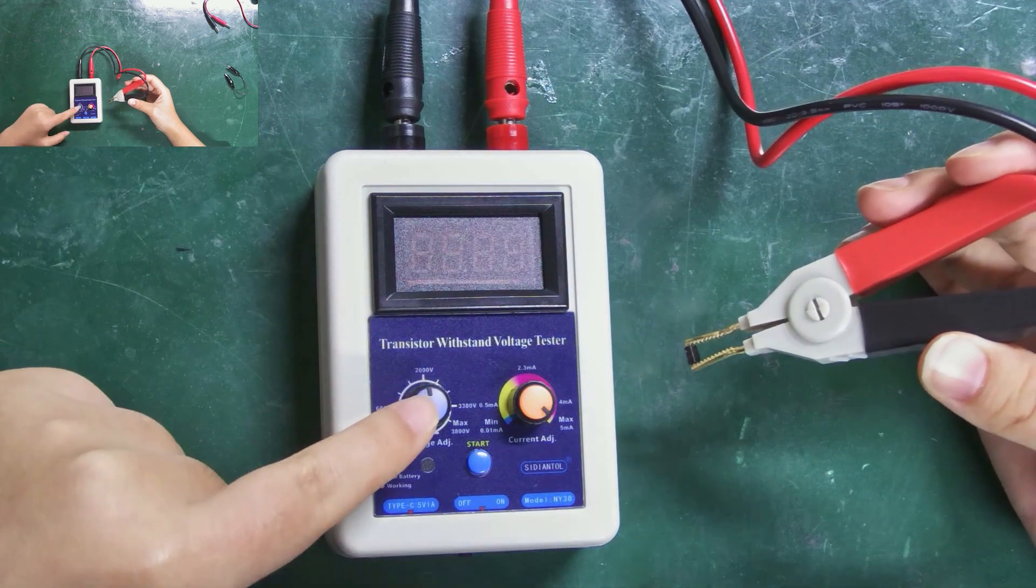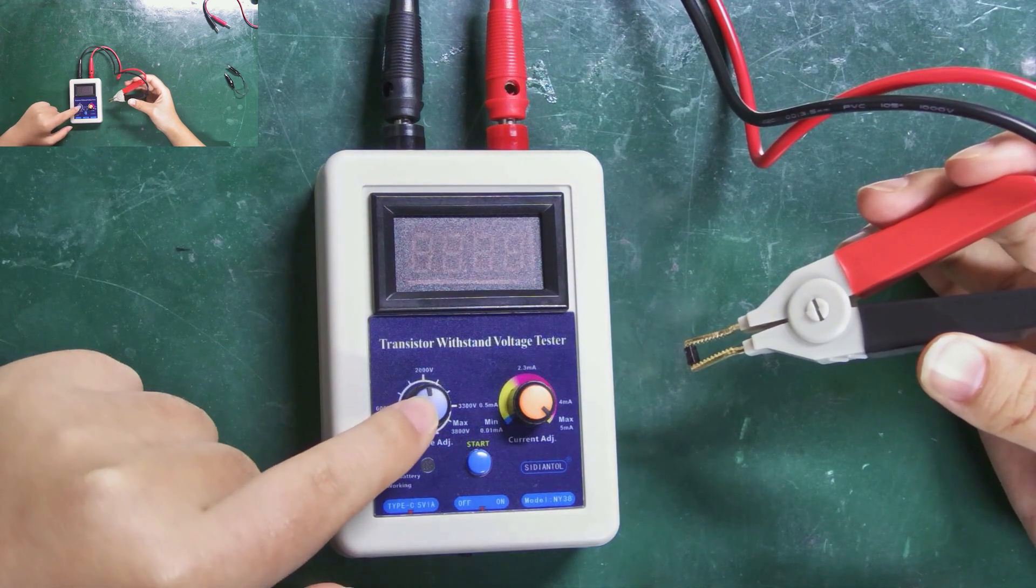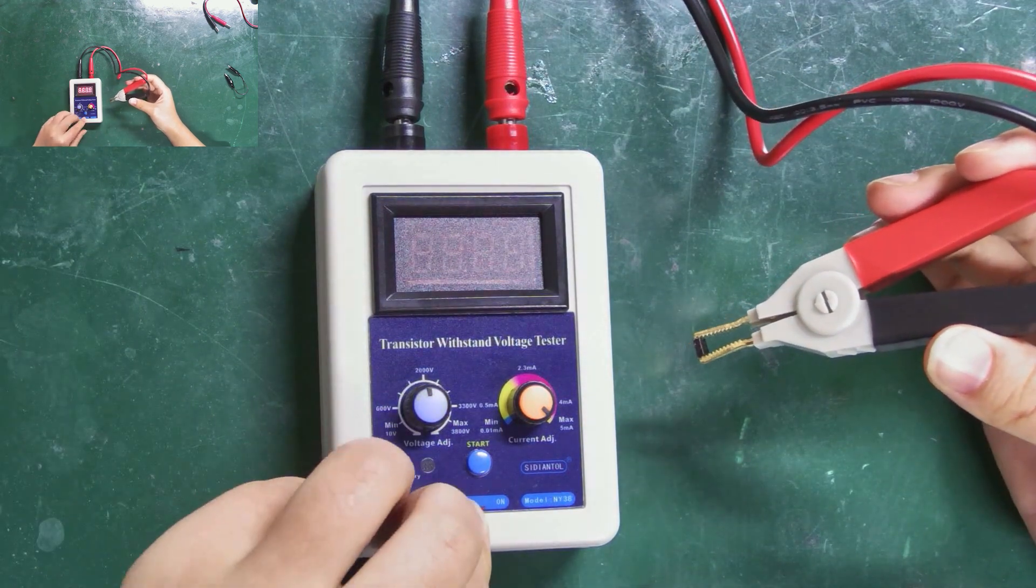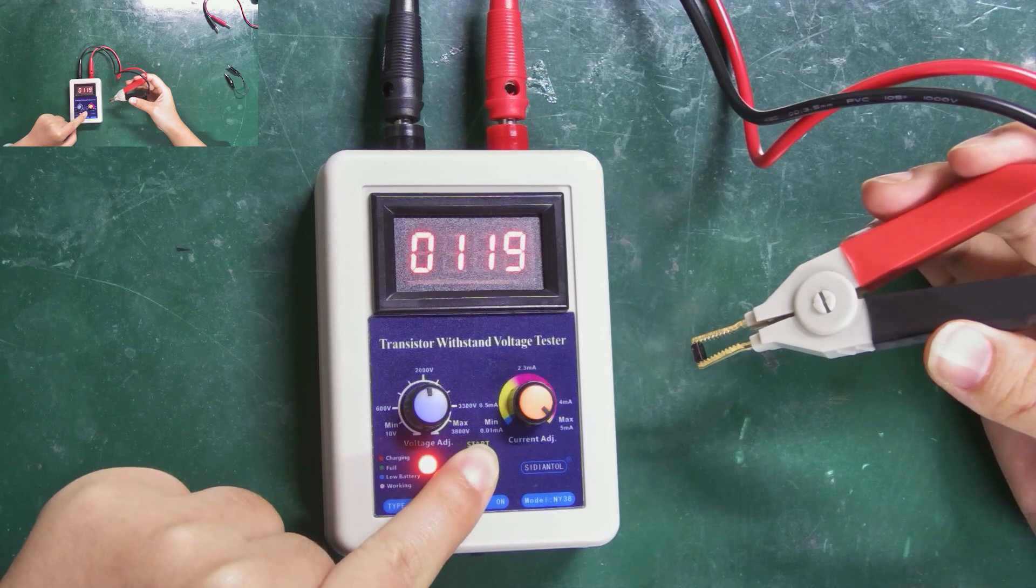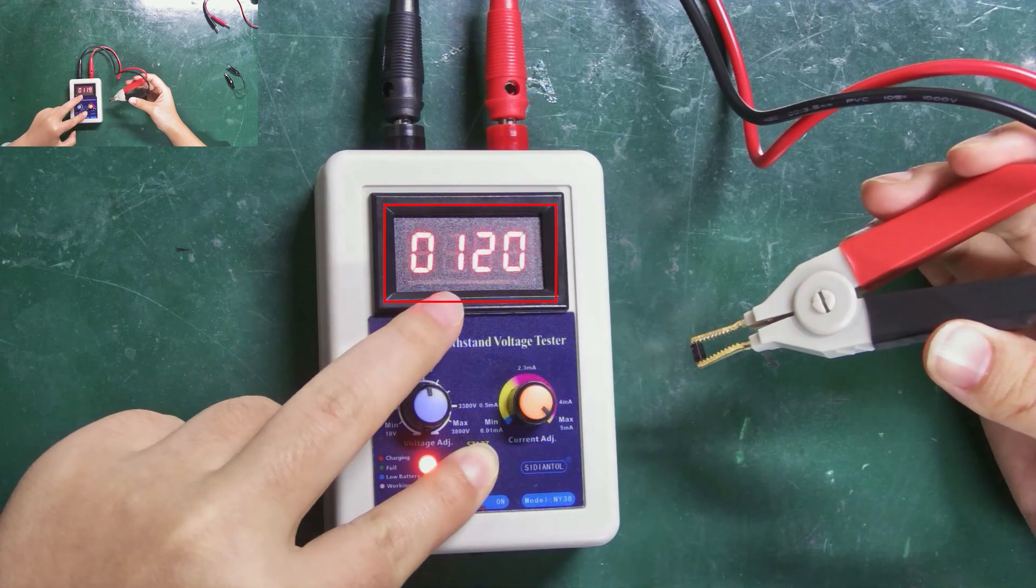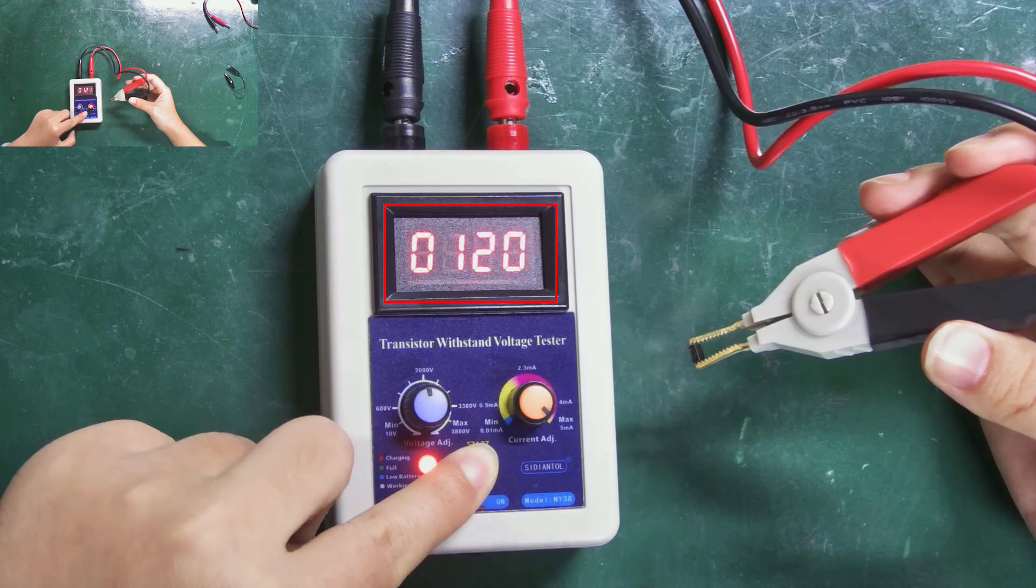Since we don't know its parameters, just set the voltage higher. It shows the withstand voltage value of around 120 volts.